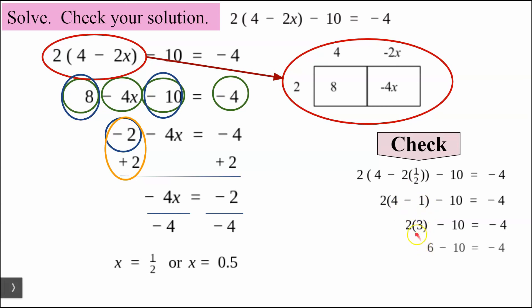Now I can multiply. 2 times 3 is 6, and then I subtract. 6 subtract 10 is negative 4. That equals negative 4. It checks.